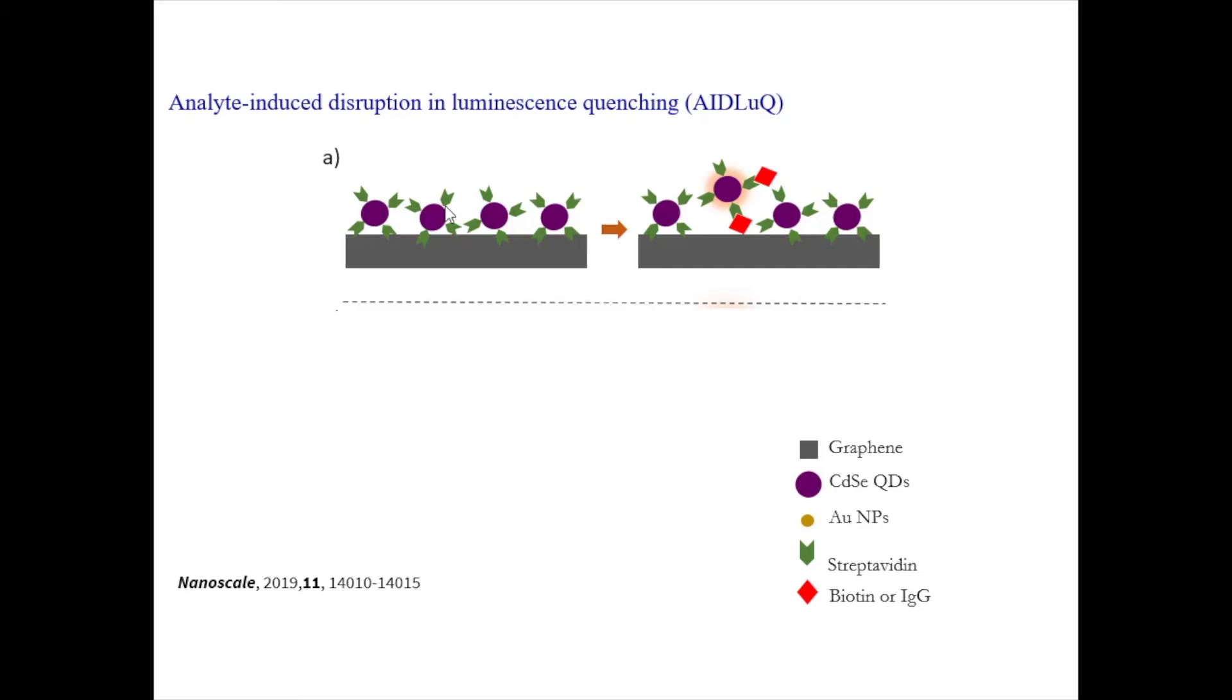So in the first case, there is quenching because this quantum dot, this purple color quantum dot is in contact with the graphene surface below. And these green things are similar to the capture antibody that you have seen before. And the analyte, if you choose the right antibody for the right analyte, they form sort of a lock and key pair. So when they attach, this quantum dot is lifted up from graphene and then it begins to fluoresce again.